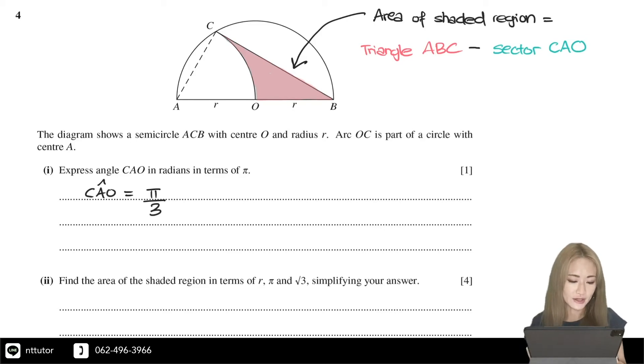So we need to find the area of triangle ABC and the area of sector CAO. We already know that angle CAO is π over 3 from part 1, and we also know that CA is equal to R as well. So to find the area of triangle ABC,